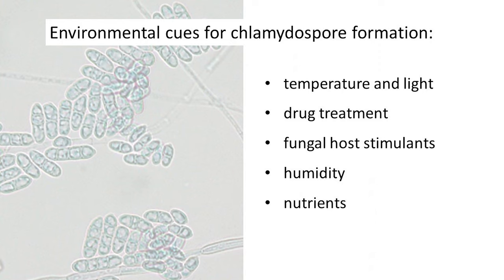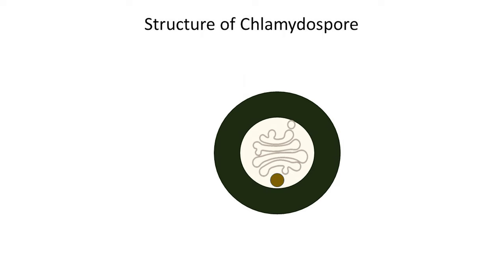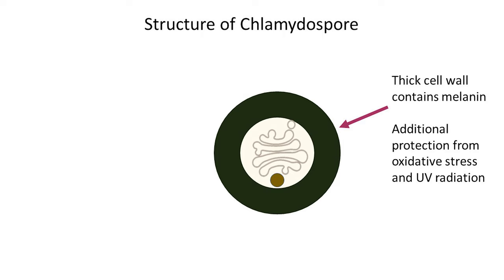Additional triggers include humidity, nutrient availability, pH level, and osmolarity. The complex interplay of these factors initiates a cascade of molecular and cellular events within the fungus, leading to the development of chlamydospores as a survival strategy. Chlamydospores are round structures with thick walls that enclose a condensed cytoplasm.